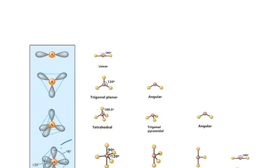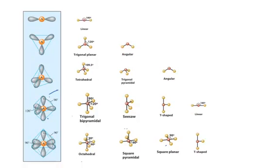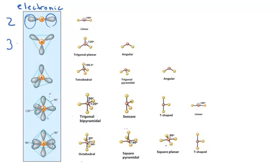This table helps us organize around the different types of shapes that you can have. There are five basic types of electronic geometry. These types depend on the number of regions of high electron density around the central atom. A region of high electron density includes a bonding pair of electrons or a non-bonding pair of electrons. Further, if you have a bonding pair, one region could include a single bond, a double bond, or a triple bond. We have two regions of high electron density, then three, and then four. These are named linear, trigonal planar, and tetrahedral.